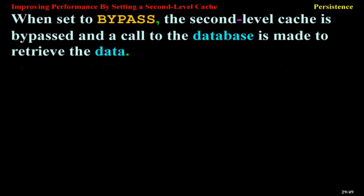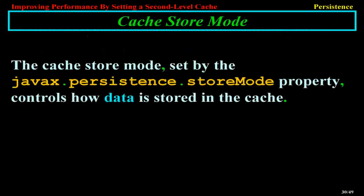When set to BYPASS, the second-level cache is bypassed and a call to the database is made to retrieve the data.